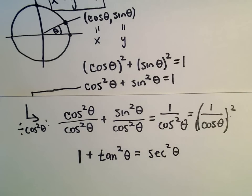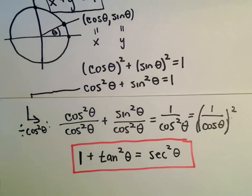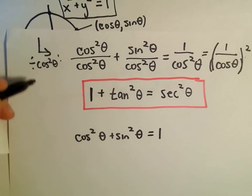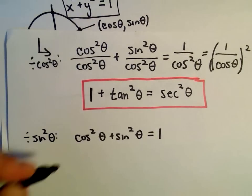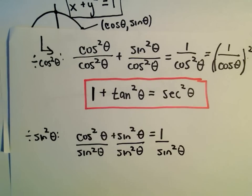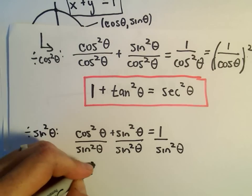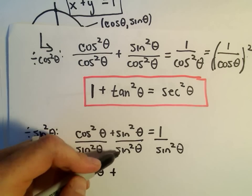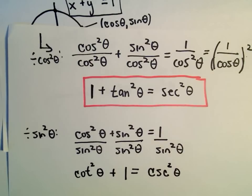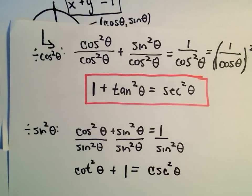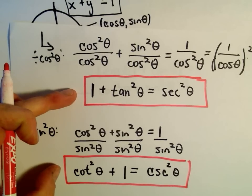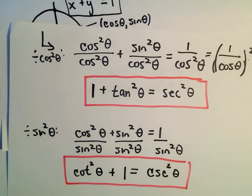We can do the same thing by dividing everything by sine squared theta instead. Cosine squared over sine squared gives cotangent squared theta, sine squared over sine squared is 1, and 1 over sine squared is cosecant squared theta. So we get yet another identity: cotangent squared theta plus 1 equals cosecant squared theta. Just by knowing one identity, I'm able to get two others quickly, simply by dividing.